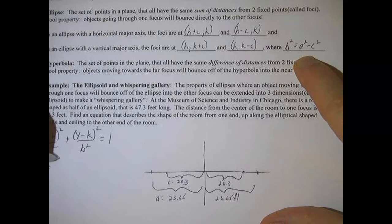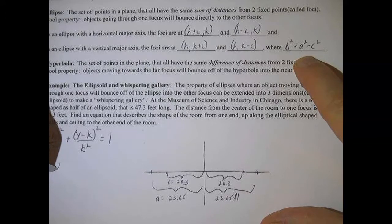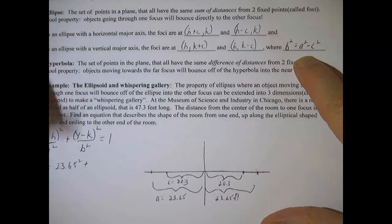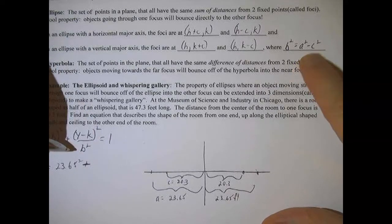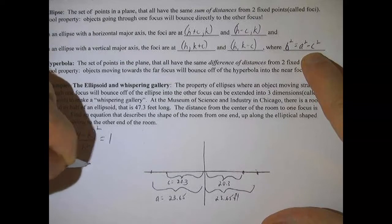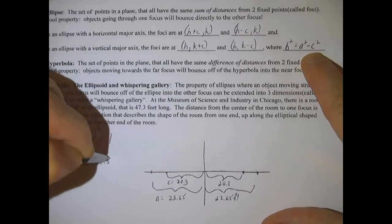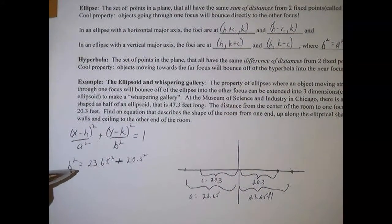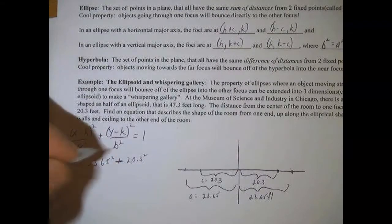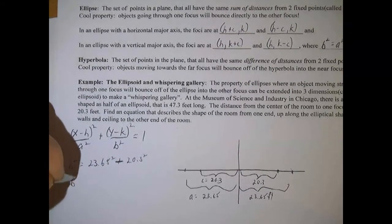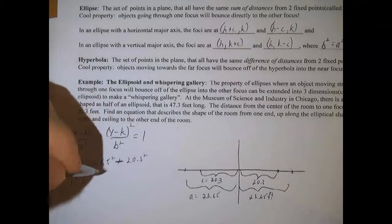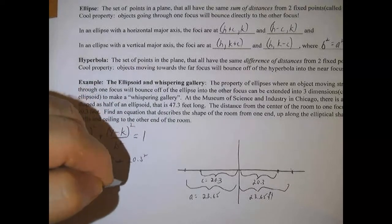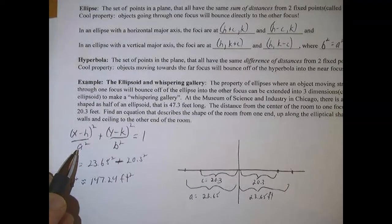So b squared is equal to a squared, 23.65 squared, minus c squared. I'm pointing to it, but I'm not saying what I'm pointing to. So 20.3 squared. And when we do that, we end up with b squared is approximately 147.24 feet squared. So that's going to give us what we need for the equation.